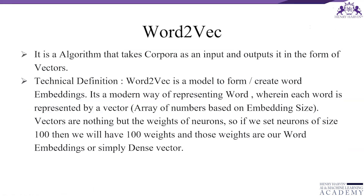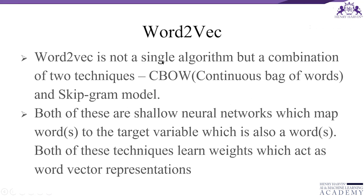Word2Vec is not a single algorithm. It is an algorithm that takes a corpus as input and outputs it in the form of vectors. Technically speaking, Word2Vec is a model to create word embeddings — a modern way of representing words where each word is represented by a vector, which is an array of numbers based upon embedding size. The vectors are the weights of neurons.